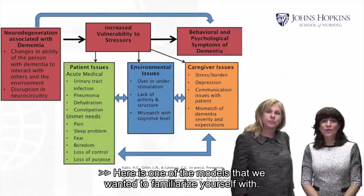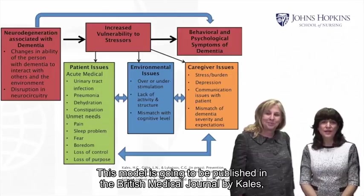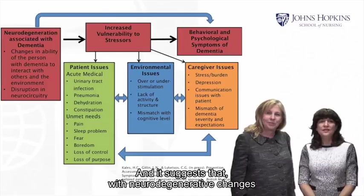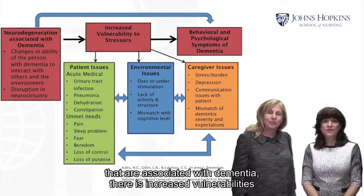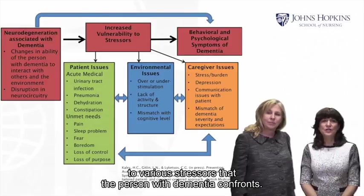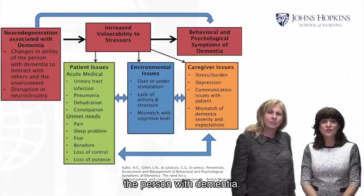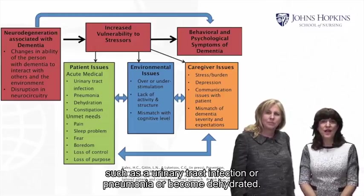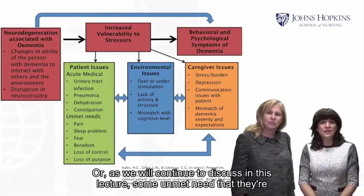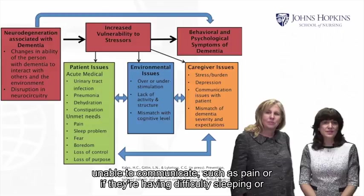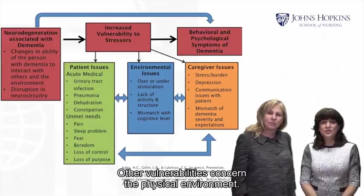Here is one of the models we wanted to familiarize you with. This model, to be published in the British Medical Journal by Kales, Gitlin, and Lichetzos, suggests that with neurodegenerative changes associated with dementia, there are increased vulnerabilities to various stressors. These stressors include factors related to the person with dementia, such as an acute medical condition like a urinary tract infection, pneumonia, or dehydration, or some unmet need they're unable to communicate, such as pain, difficulty sleeping, fear, boredom, or a sense of loss of control and purpose.